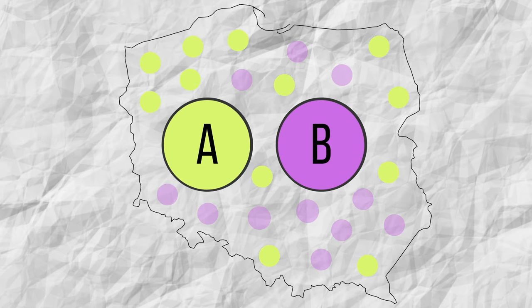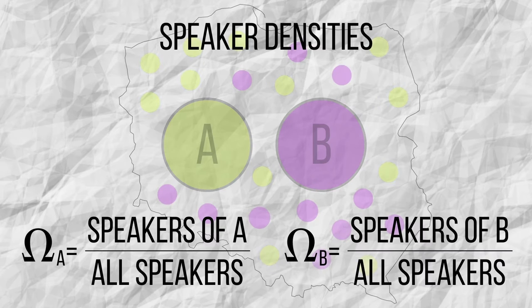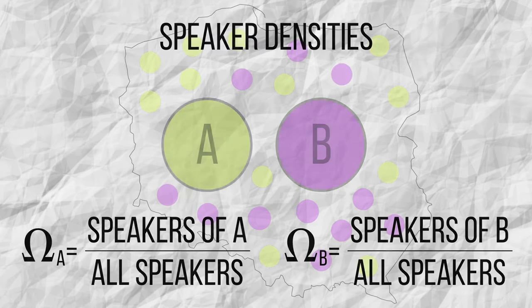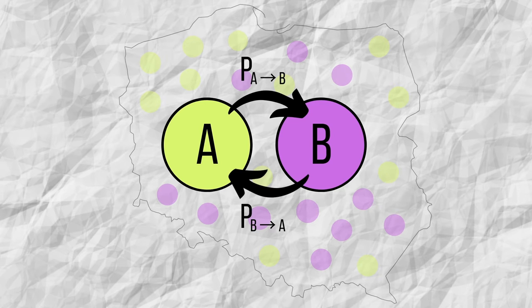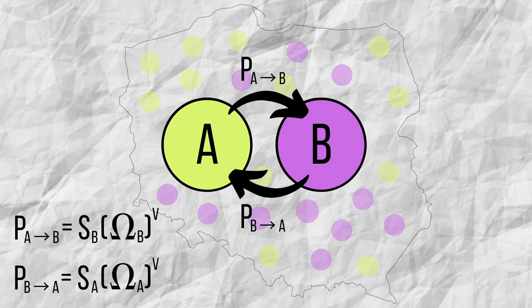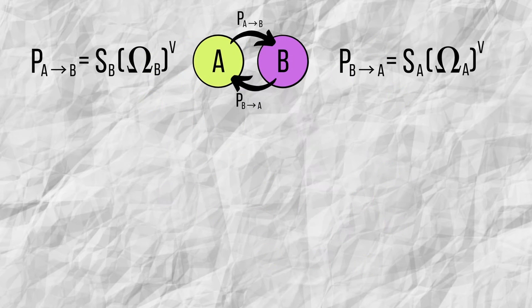For the sake of simplicity, let us consider a territory in which two generic languages, A and B, are spoken. We will also assume that all its speakers are monolingual. We will then have a total number of speakers that use A and a total number of speakers that use B. If we divide these quantities by the total number of speakers, we obtain the speaker densities of each language. What we are interested in is what is the probability that a speaker changes language. In this model, the probabilities are calculated in this way. You may ask, what are the S's and the V?